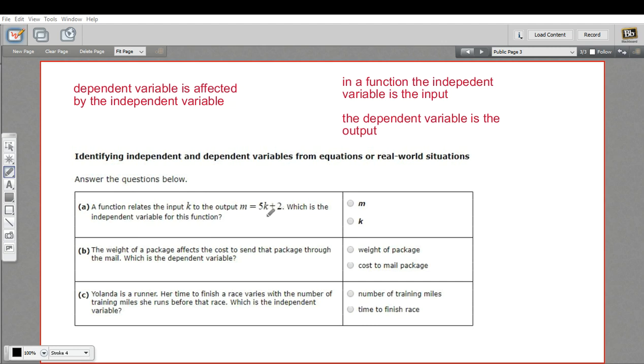m is going to be 7. If k is 2, m is going to be 12. So this is our dependent variable here. That makes k our independent variable. This is the input of the function, so that's our independent variable. So that one's k.